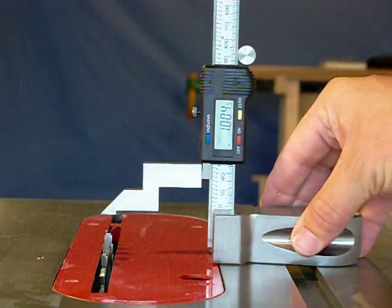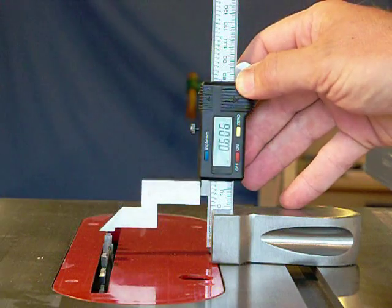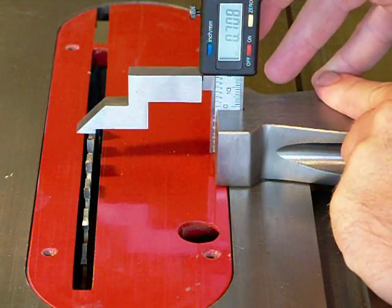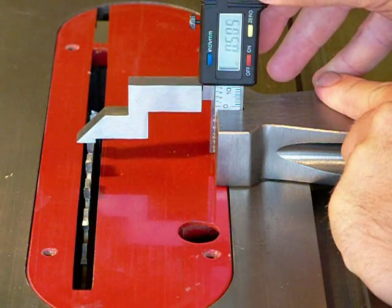With your table saw unplugged, zero the measuring arm on the table, then lower the arm until it contacts the top of the blade. You can also lock the arm at the desired height and bring the blade up to it.